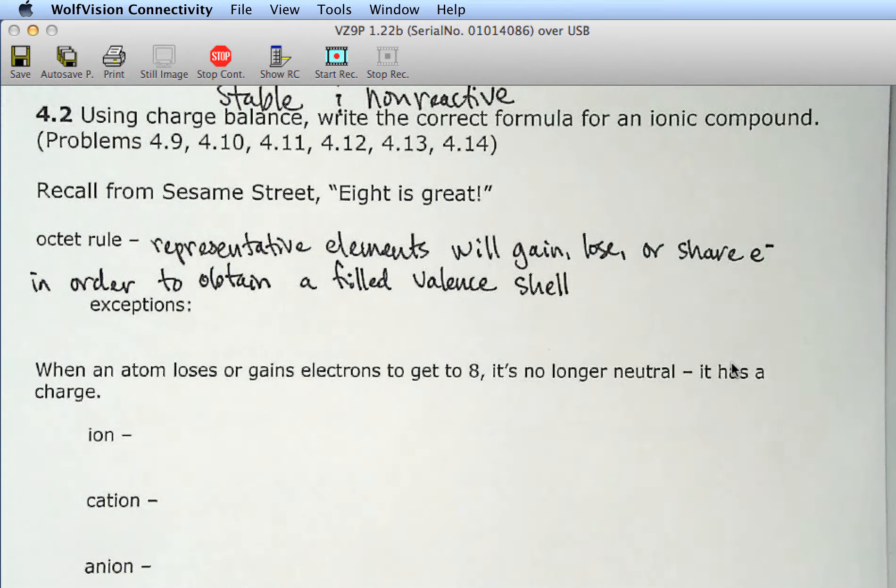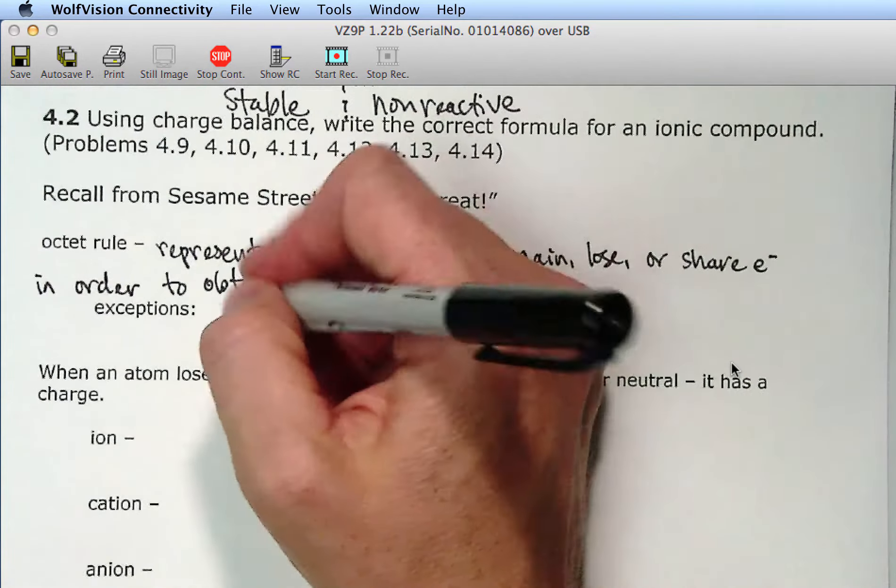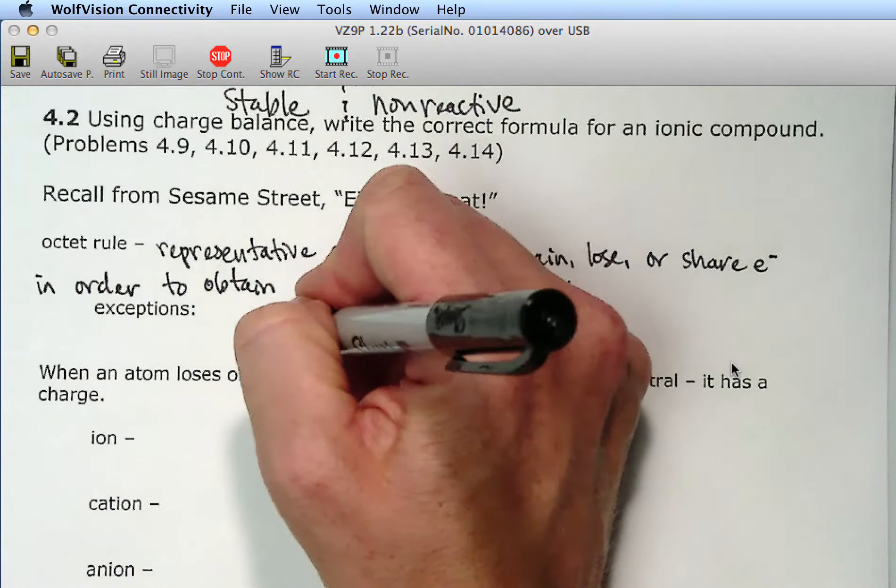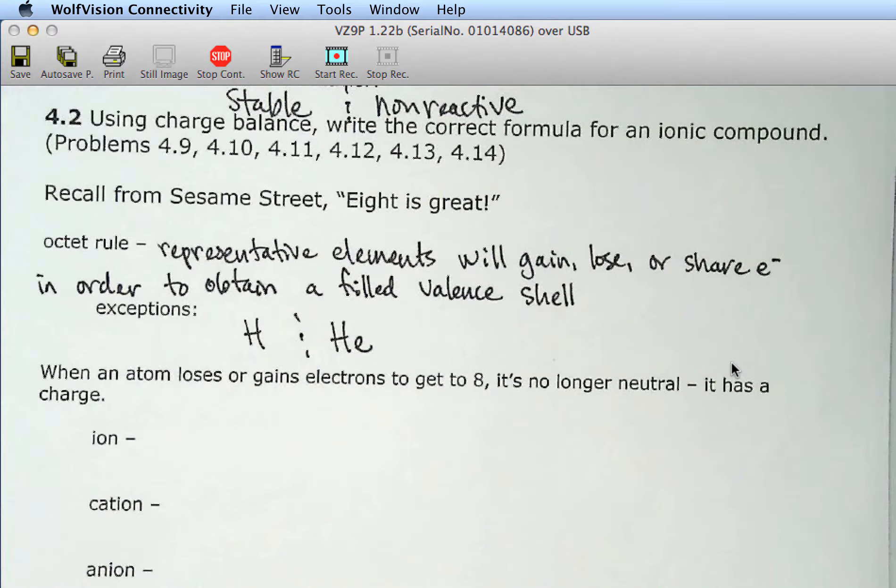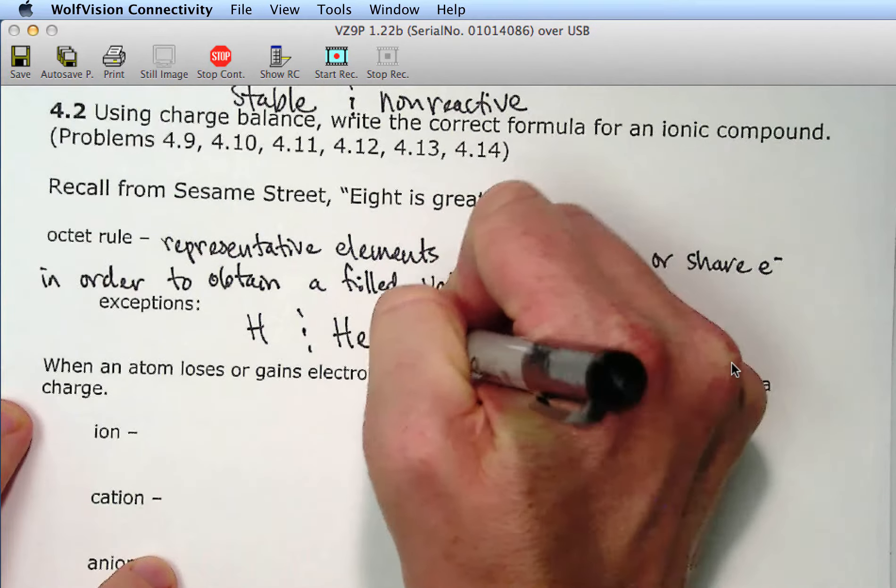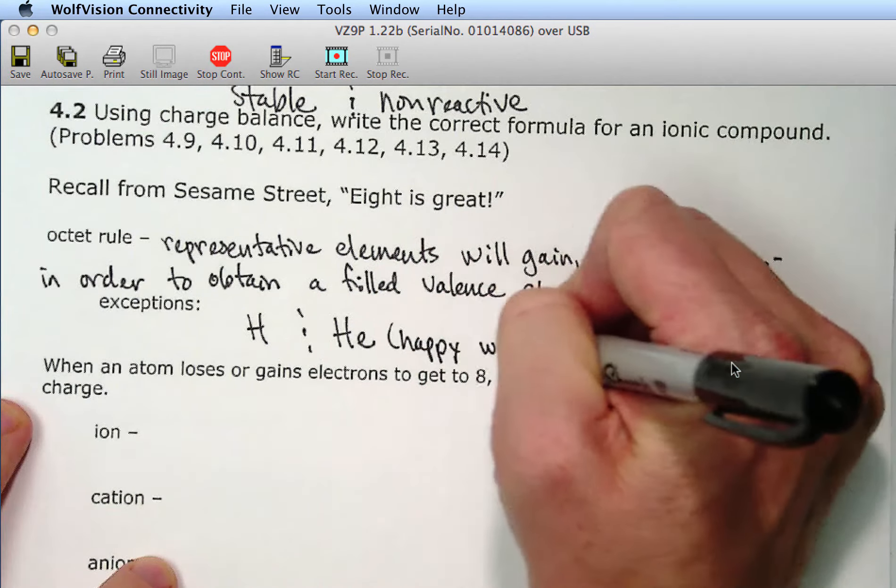The octet rule states that representative elements will gain, lose, or share electrons in order to obtain a filled valence shell. A filled valence shell. So, if you can remember, eight is great. That will get you far from unit two.